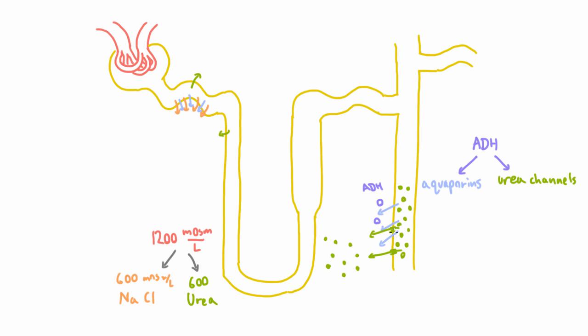And it turns out that actually the collecting duct is not the only place that's permeable to urea, but actually this part of the nephron that we haven't talked about much at all, this thin ascending limb of the loop of Henle, also is permeable to urea.